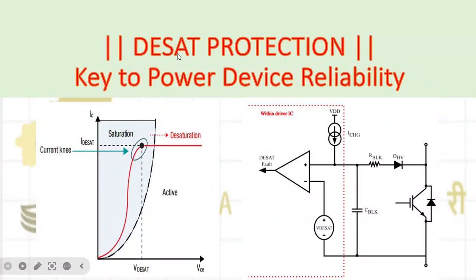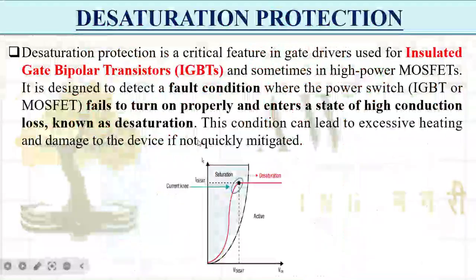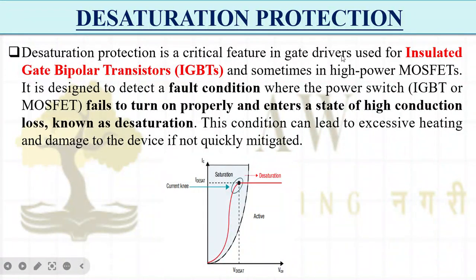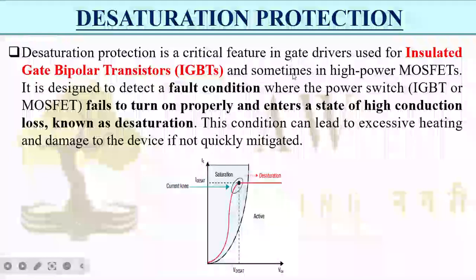DSAT stands for desaturation protection. Now let's understand this in detail. Desaturation protection is a critical feature in a gate driver used for insulated gate bipolar transistors (IGBT). Mostly this desaturation protection is used for IGBTs, and sometimes for low-power MOSFETs.